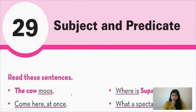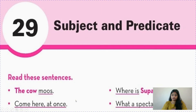We can see different kinds of sentences here. 'The cow moves' — it is giving information, so it is a declarative or assertive sentence, which starts with a capital letter and ends with a full stop. 'Come here at once' — it is an order or command, so it is an imperative sentence. The next is a question with a question mark, so it is an interrogative sentence. The last one has an exclamation mark, expressing emotions, so it is an exclamatory sentence.